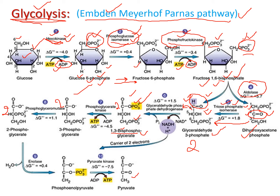Step seven is the reverse of reactions one and three. Instead of a phosphate group being attached to the molecule, the phosphate group is removed from 1,3-bisphosphoglycerate and transferred to ADP, converting it to ATP. This generates ATP from ADP, and 1,3-bisphosphoglycerate is converted to 3-phosphoglycerate. This type of ATP generation is called substrate-level phosphorylation.